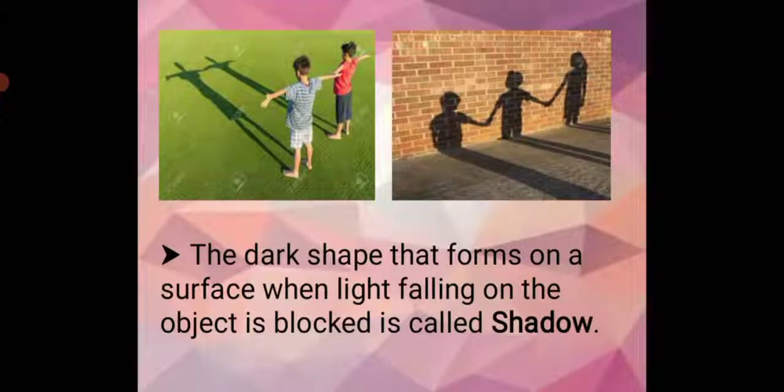Dear students, you can see there are two types of pictures. In these pictures, the children are standing and you can see there is a dark shape. It is called shadow. So students, the dark shape that forms on a surface when light falling on the object is blocked is called shadow.